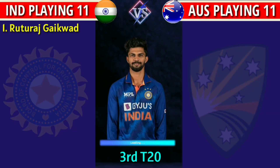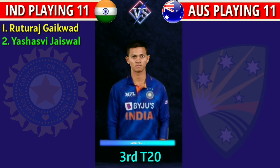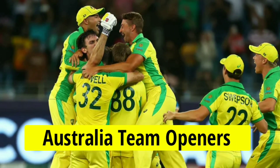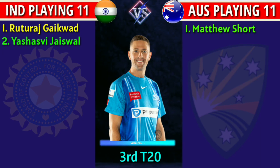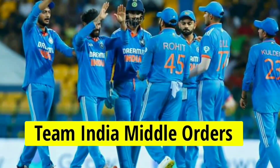Team India openers: 1. Ruturaj Gaikwad, right-handed batsman. 2. Yashasvi Jaiswal, left-handed batsman. Australia team openers: 1. Matthew Short, right-handed batsman. 2. Steven Smith, right-handed batsman.